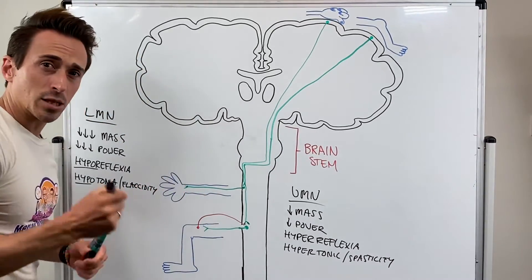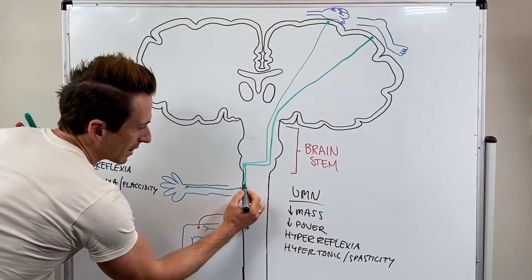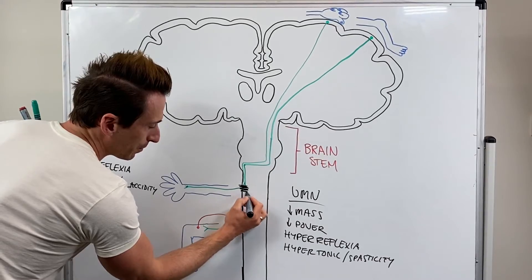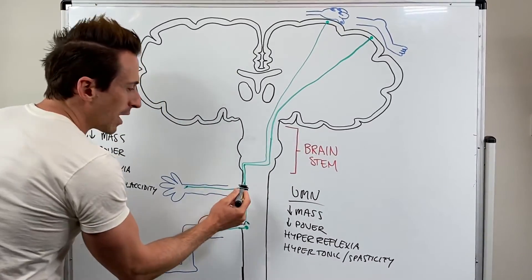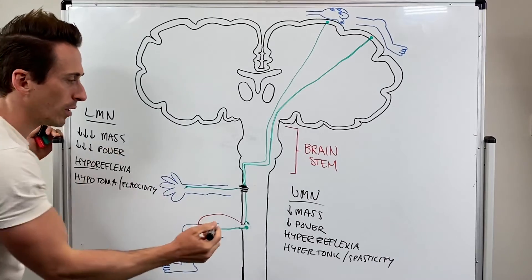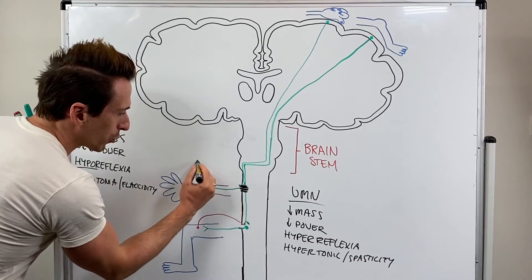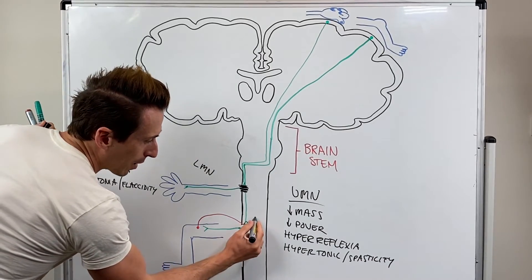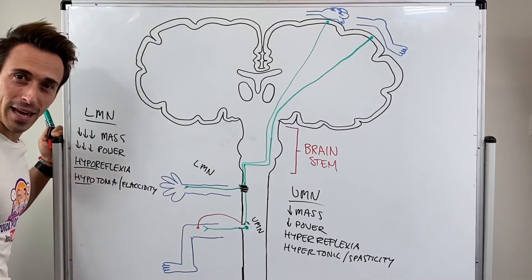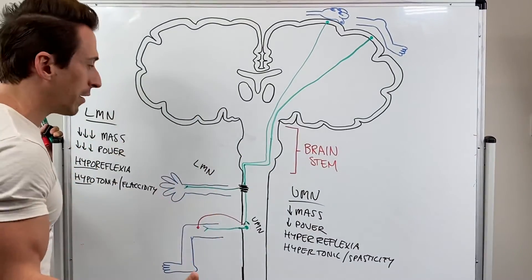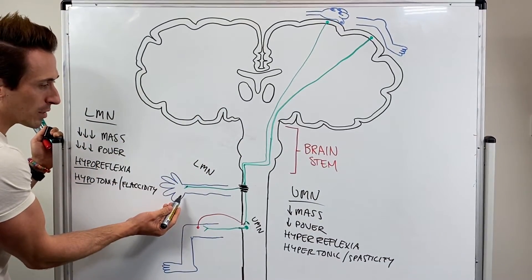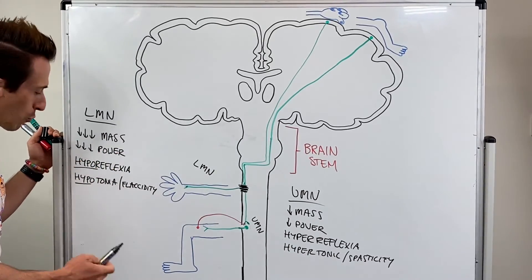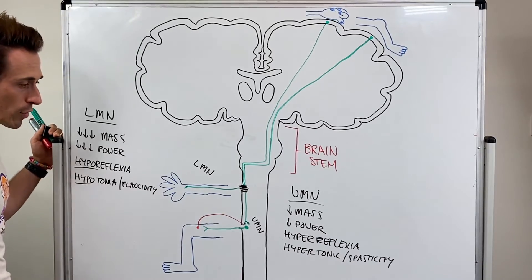Now let's just say there's a spinal cord injury at this particular level, so of the neck, the cervical area. So there's damage here. What can you see has happened? If there's damage at the cervical level, it's damaging the lower motor neuron for the arm or hand, but it's damaging the upper motor neuron for the leg. So the types of ways it manifests is, at least for the arms, it's a lower motor neuron injury: loss of mass, loss of power, hyporeflexia, so no reflexes. The muscle is flaccid, it's not contracting.